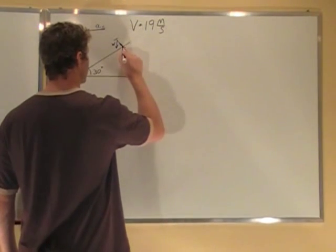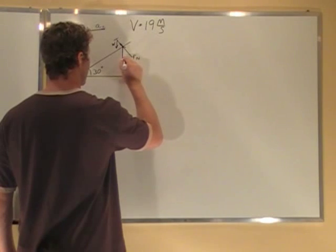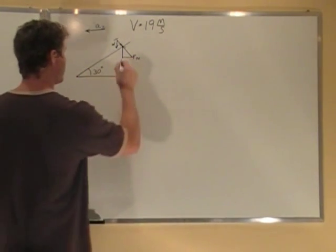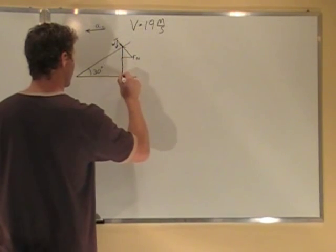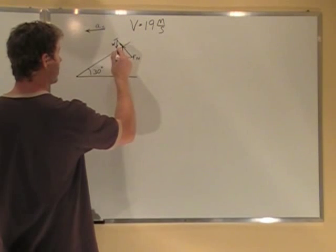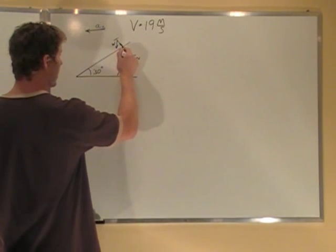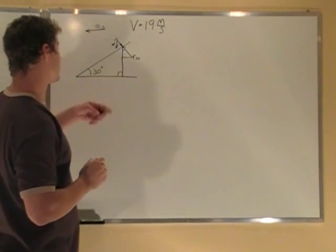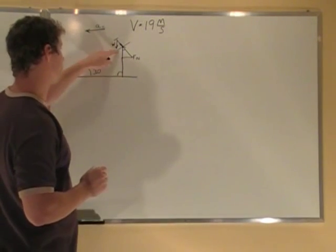I always like to draw this out just so we understand exactly what's going on with the angles. If this is 30 here, you can look at this big triangle that it makes: 90, 30, this has to be 60 here. This is 60, and this whole thing is 90, so this is our 30 degrees in here. So if this is 30 degrees, we're going to be using sine for x and cosine for y.